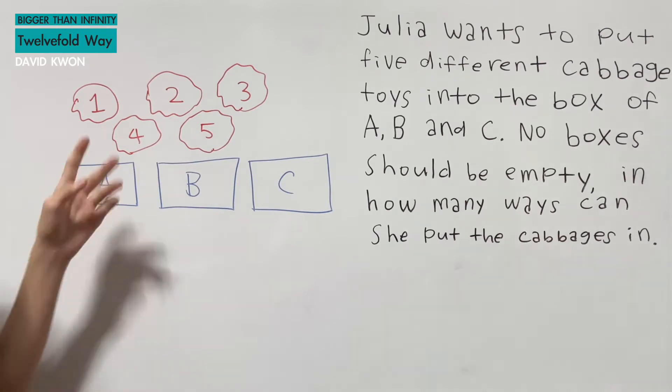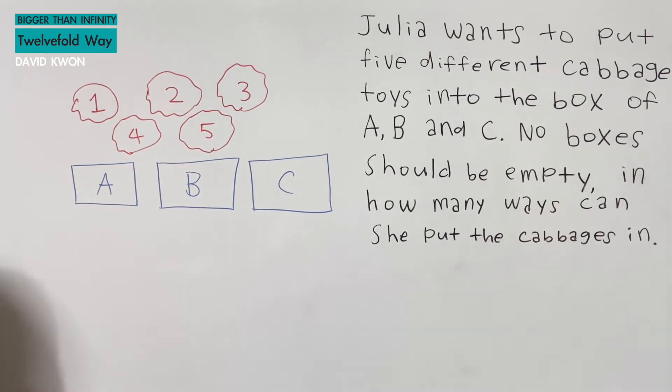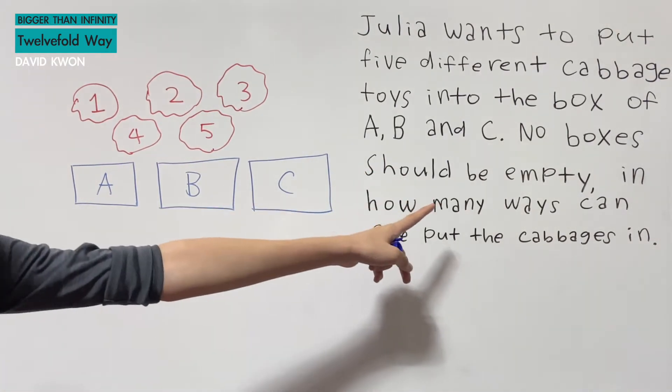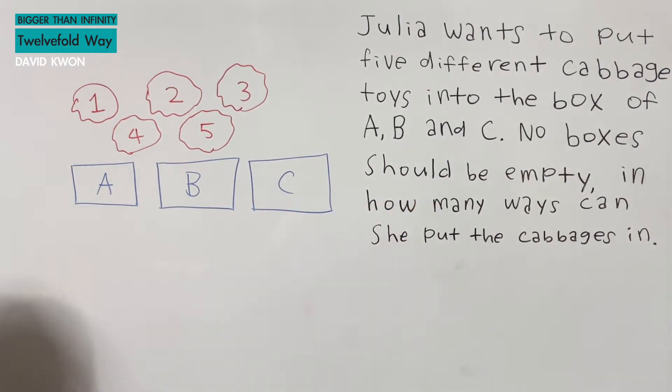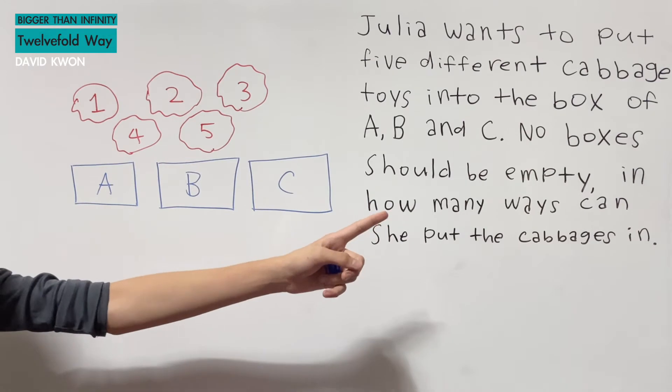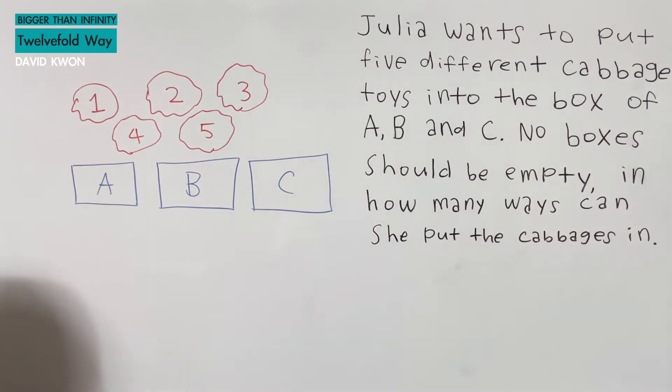We want them to be inside the boxes, and no boxes should be empty, so everyone has something to carry. So when it says no boxes should be empty, we do the opposite, which is count every possibility minus the opposite of no boxes, then we get no boxes should be empty.